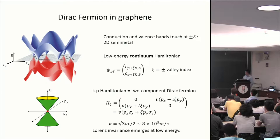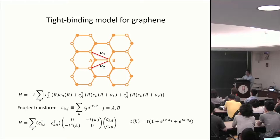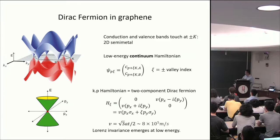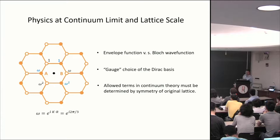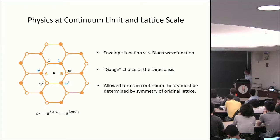The form of the Brillouin zone itself is not gauge invariant. In this particular choice of basis, the A and B atoms on the horizontal bond are grouped together within the unit cell, leading to a particular form where the plus-K valley has character p minus ip. This is a matter of gauge choice. It's very important that when comparing results of continuum theory, we translate all results into the actual physical wave functions on the lattice. Likewise, the allowed terms in the continuum theory must be determined by the symmetry of the original lattice.